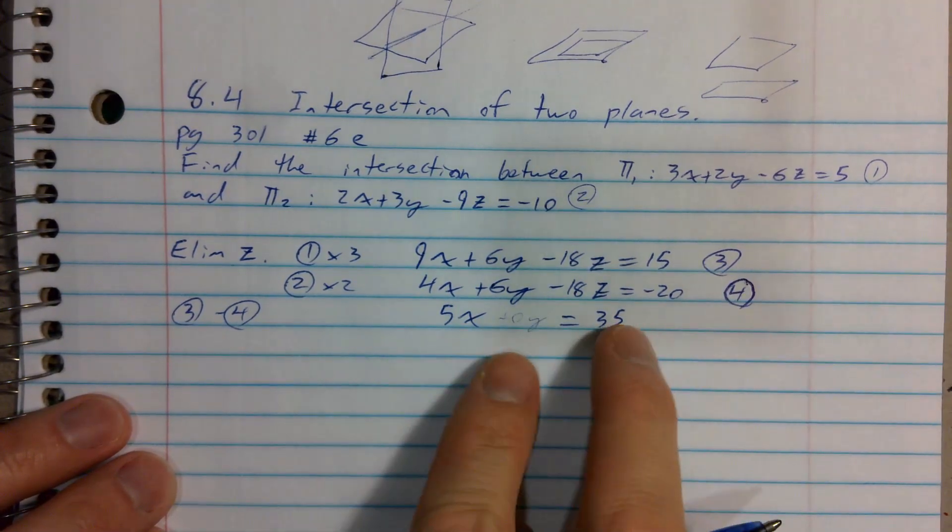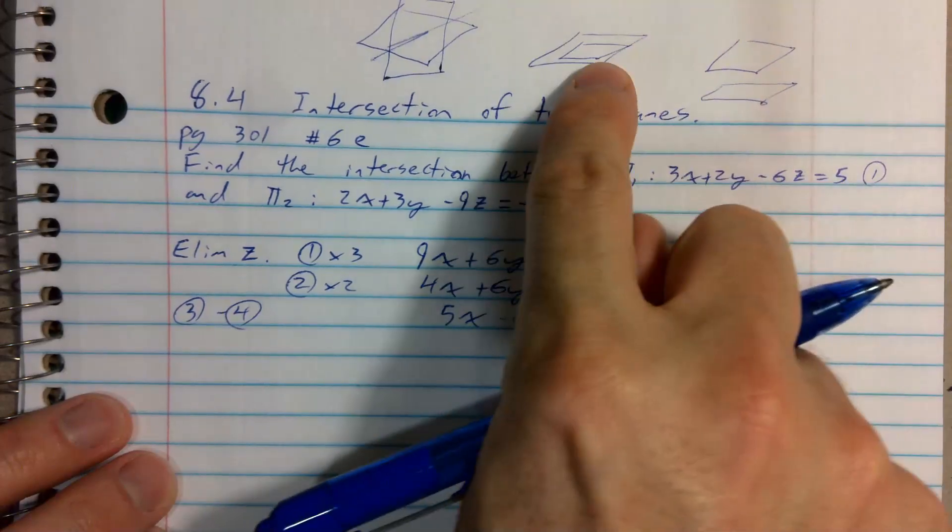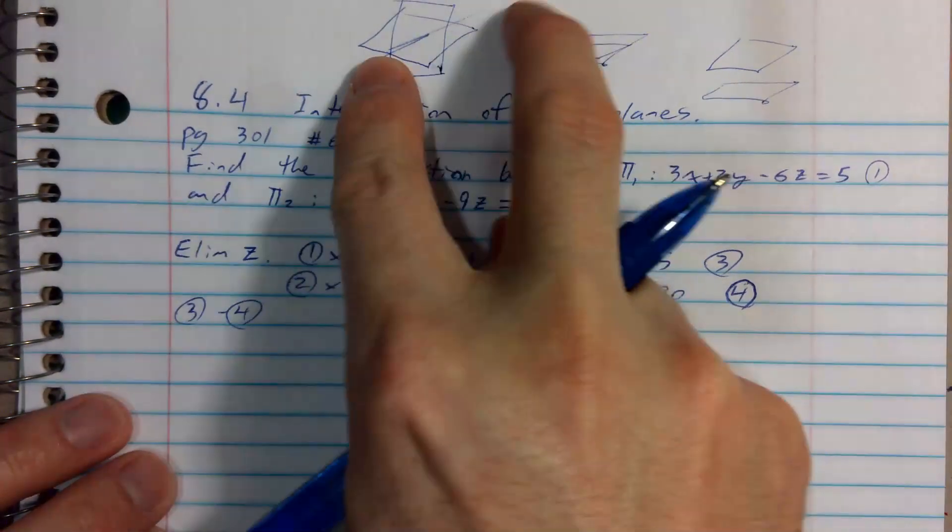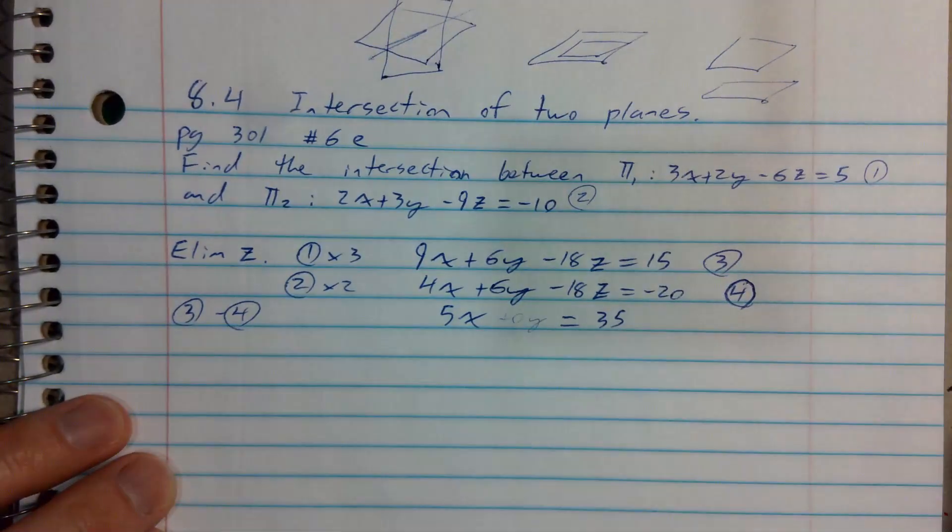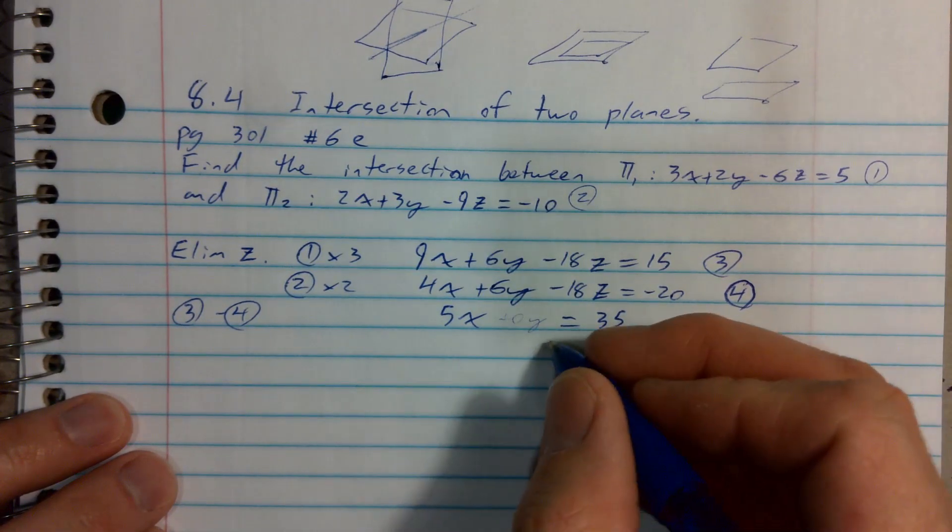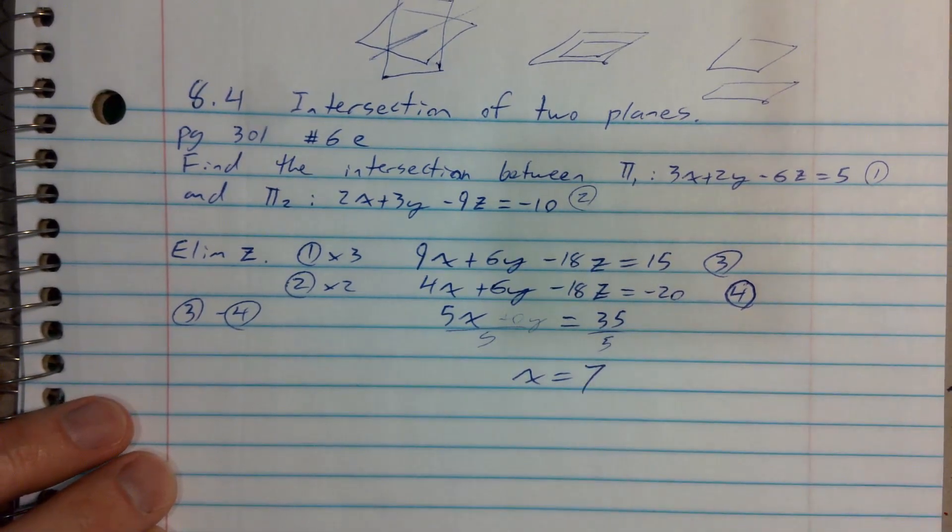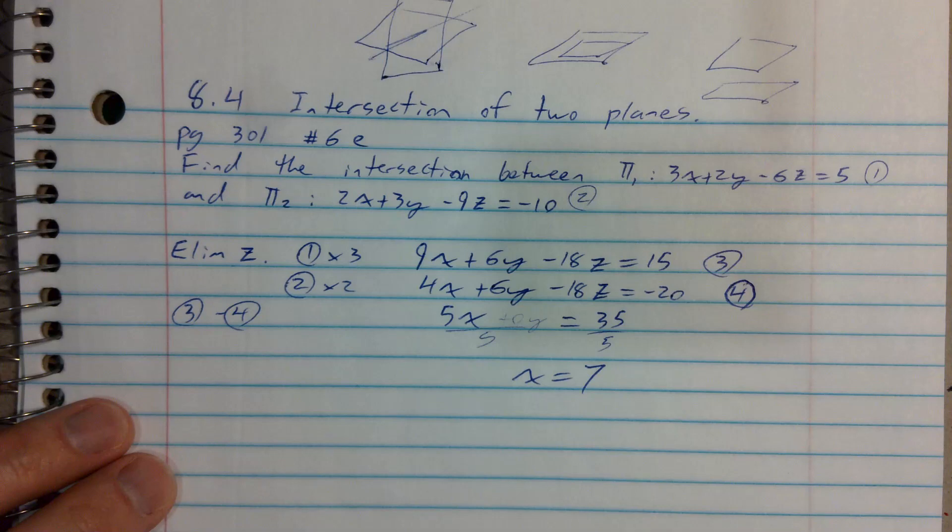So this seems strange because I was expecting either a contradiction or a truism or a line of intersection where there's an infinite number of solutions. And what I'm getting is an equation that has only one solution. And this might cause me some concerns and say, wait a minute, how could x just always be 7?